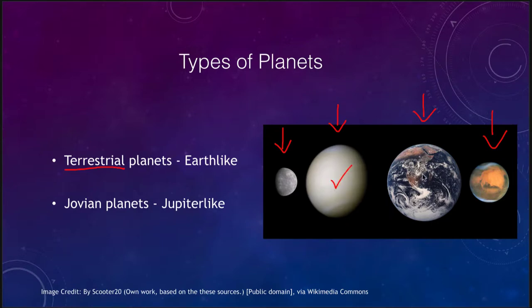We have had soft landings on Venus, we've brought astronauts back to the Earth so we've soft landed there, and we've had soft landings on Mars. The only one that has not yet been landed on — at least as a soft landing — would be Mercury. Mercury has only been visited by a couple of spacecraft so far.